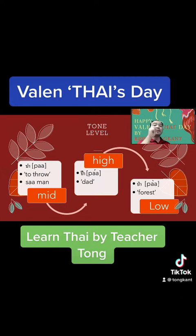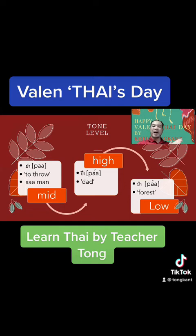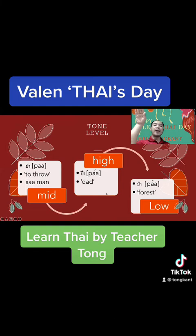Then it becomes higher: 'paa' — 'paa' means daddy, like papa. You use a low sound and then the next sound is higher. But if it becomes lower, 'paa' will be the forest or jungle. So you will hear three sounds: 'paa' (throw), 'paa' (daddy), 'paa' (forest).